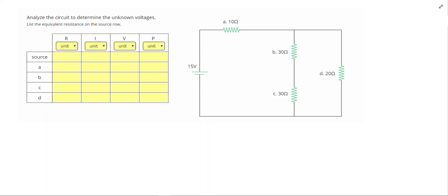In this video we're going to work on solving complex circuits. Let's go ahead and write down the given we have for this problem. We know that the voltage from the source is 15 volts. The resistance for A is 10 ohms, 30 ohms for B and C, and 20 ohms for resistor D. The units of resistance are ohms, amps for current, volts for voltage, and watts for power.